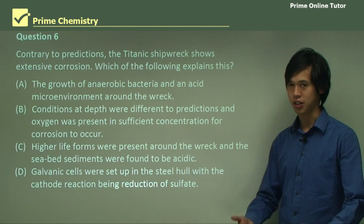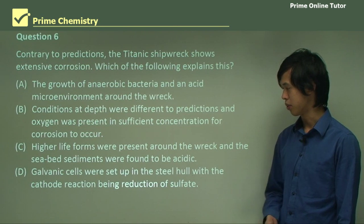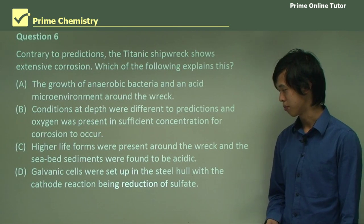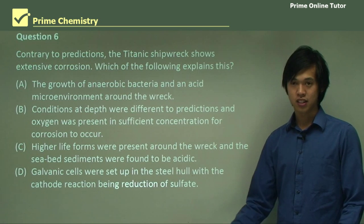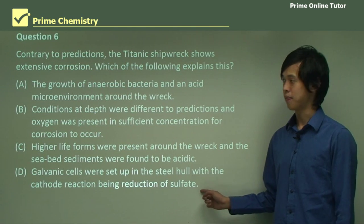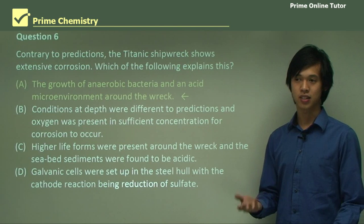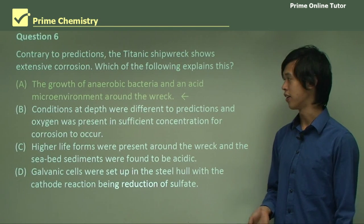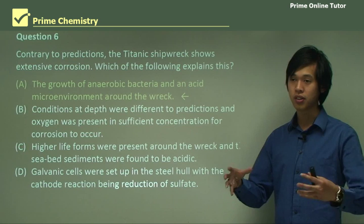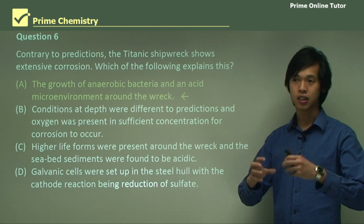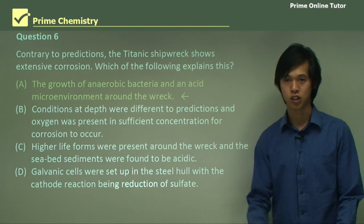The answer is probably A: the growth of anaerobic bacteria — yes, that's one reason for corrosion — and an acidic microenvironment around the wreck. So it was not only the acidity, but also the bacteria damaging the ship.